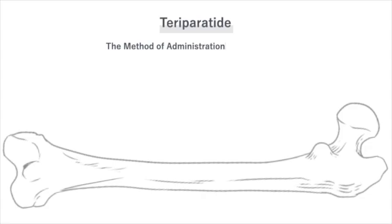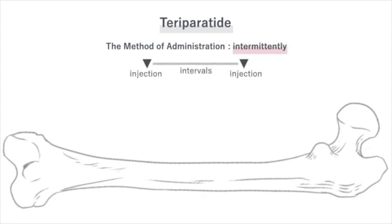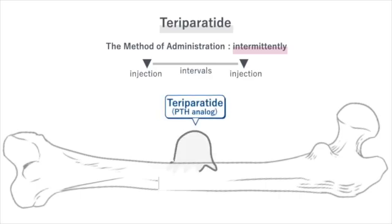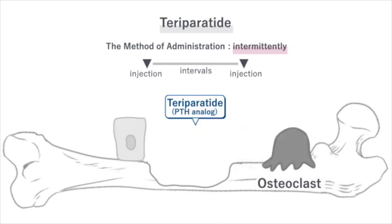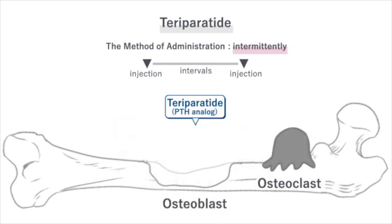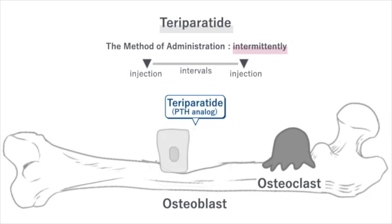The important thing is the method of administration — intermittently, meaning with intervals. When the PTH analog teriparatide activates osteoclasts and bone resorption occurs, osteoblasts become activated to repair the bone. By giving osteoblasts enough time to repair the bone, the bone condition improves.